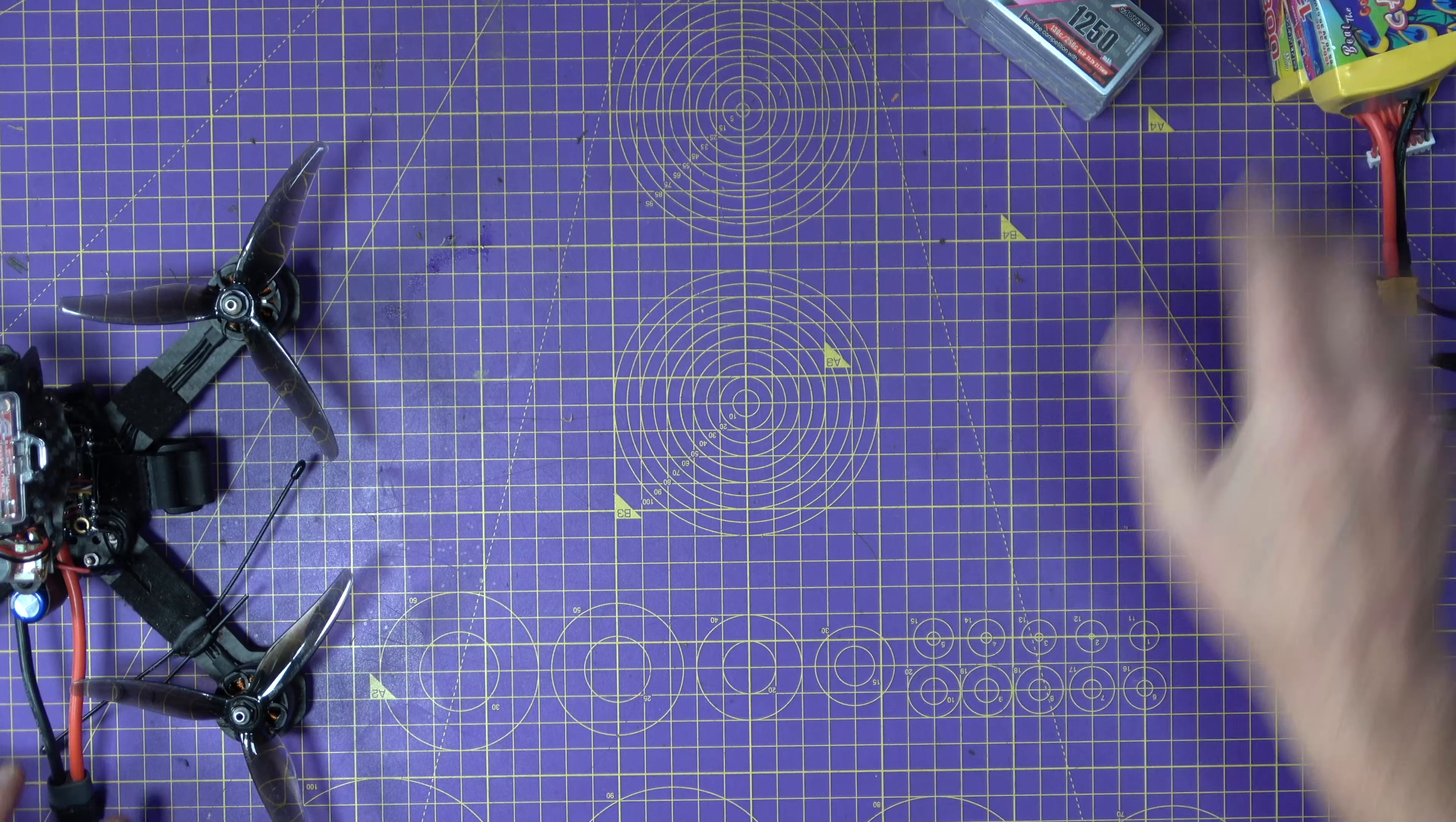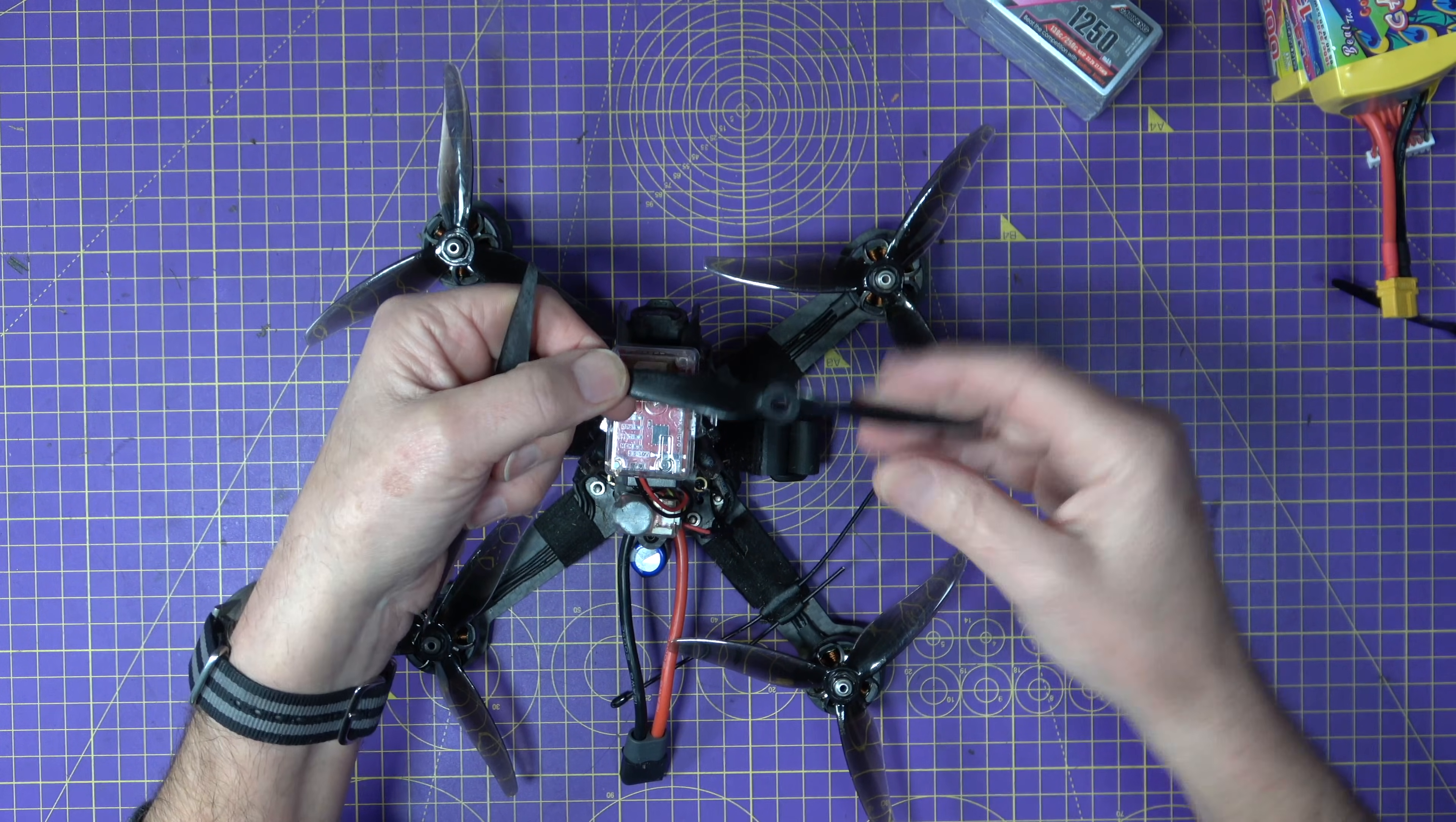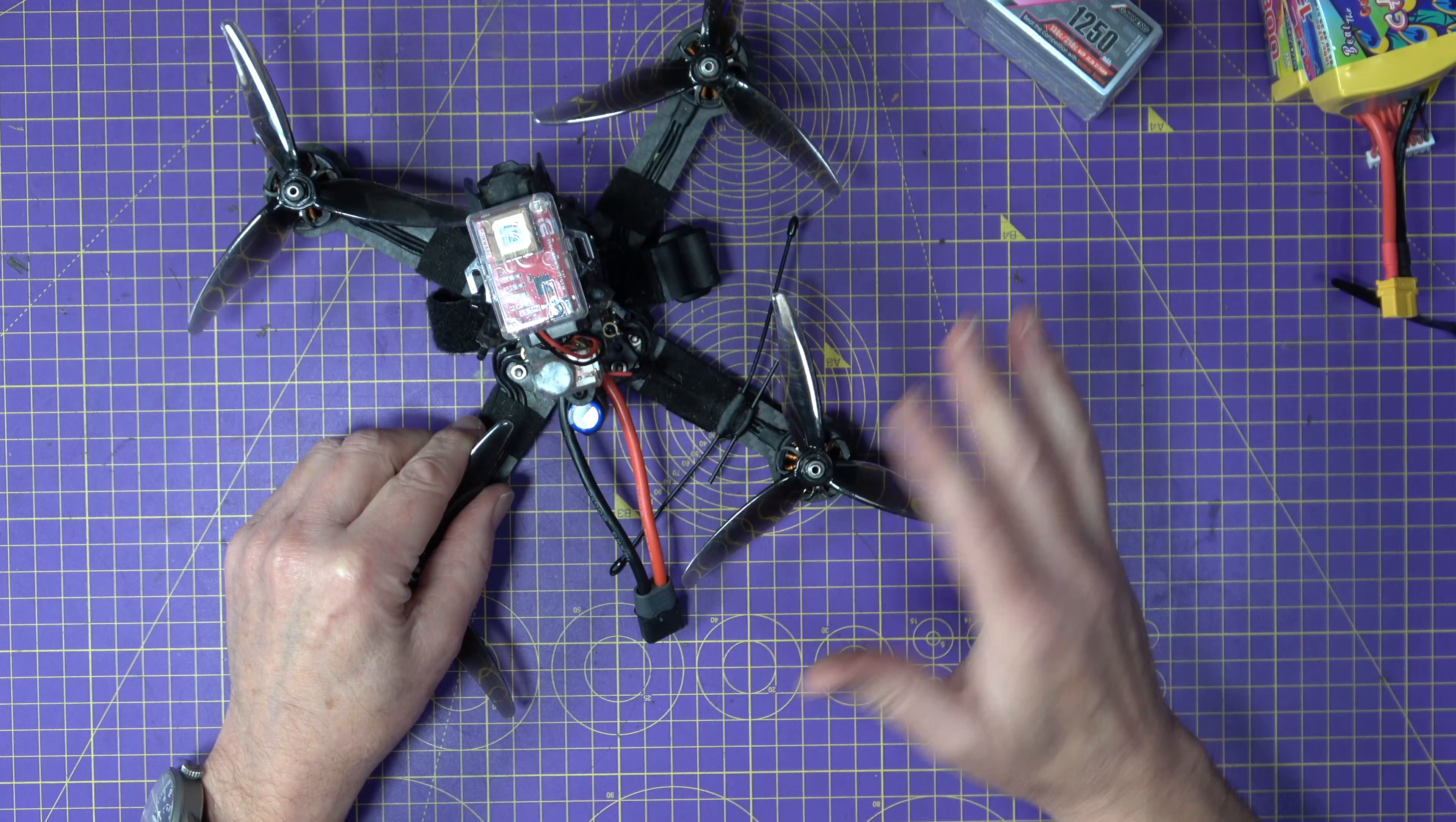Now if you watch those high speed drone videos you'll notice they nearly all run bi-blade props like this and that makes sense for long sustained high speed runs but for maximum acceleration from a standing start I've got this theory that tri blades might work better. They work well in racing for fast cornering. There's more blade area on it they've got more bite off the line.